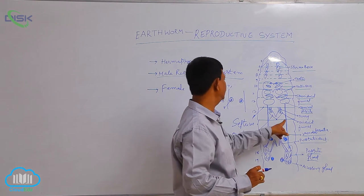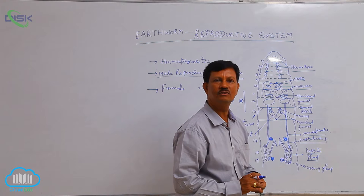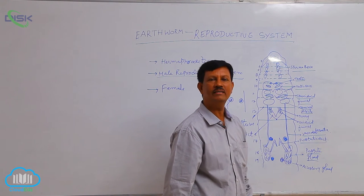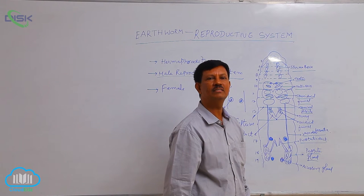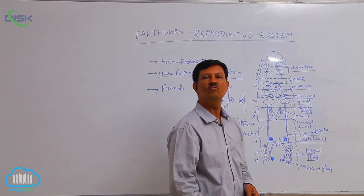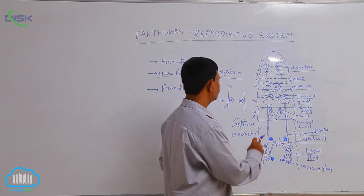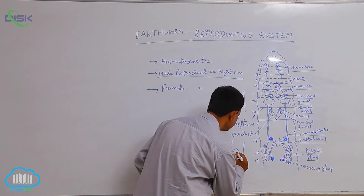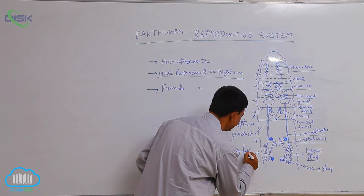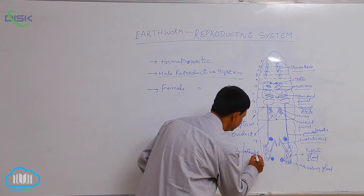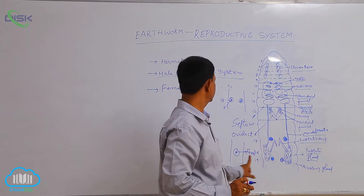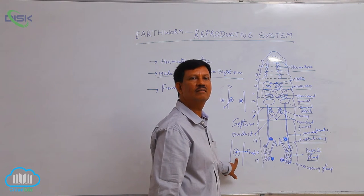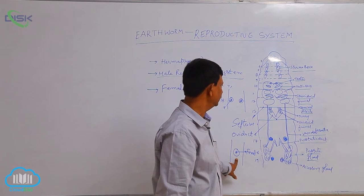Both left and right oviducts are united and form a single duct which opens to the outside by a pore known as the female genital aperture. This female genital aperture is present on the ventral side of the 14th segment. Through the female genital aperture, the female gametes come out from the body.